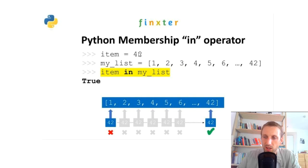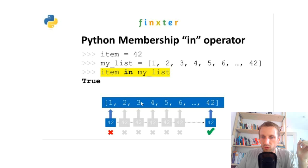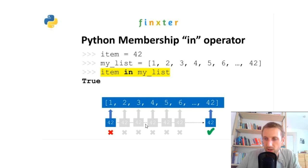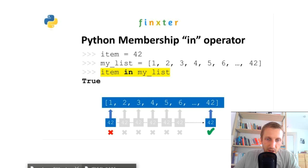How does it work exactly? For a given list, the `in` operator iterates over the list and compares each element for equality using the double-equal comparison operator. It checks: is 42 equal to 1? No. Is 42 equal to 2? No. And so on. This tells you that for lists, the worst-case runtime complexity is linear — O(n) — with the number of elements.